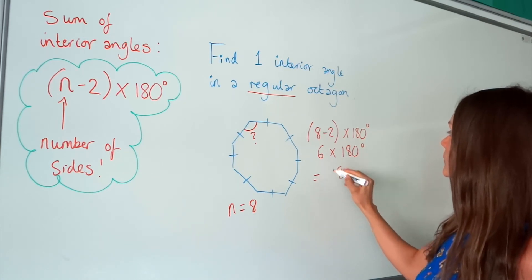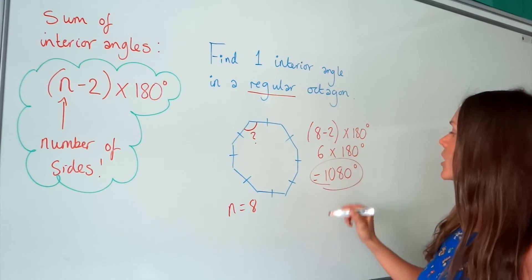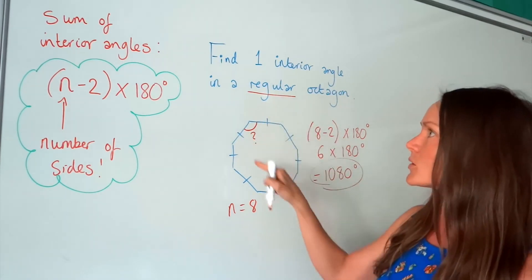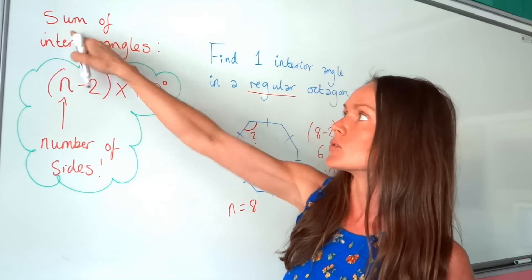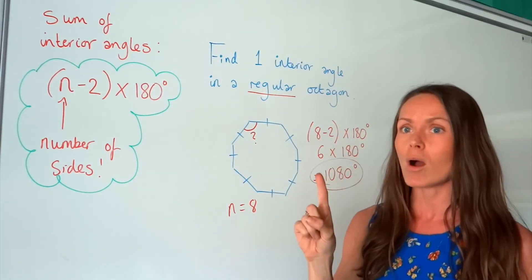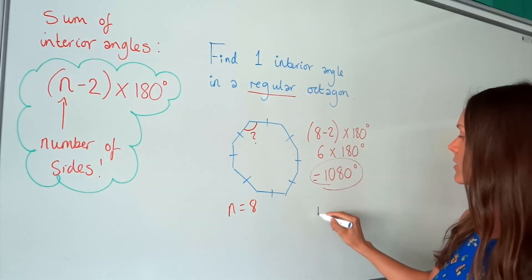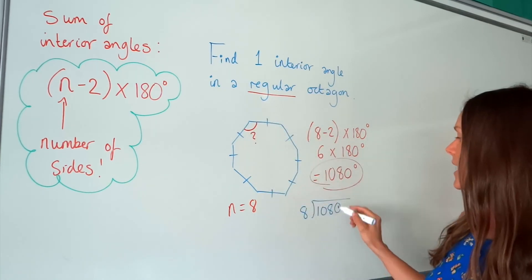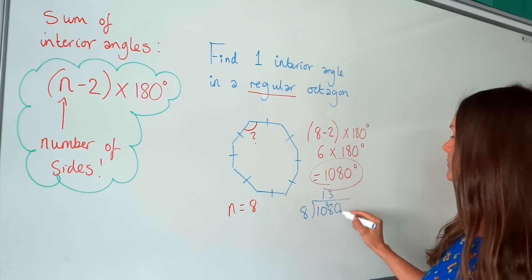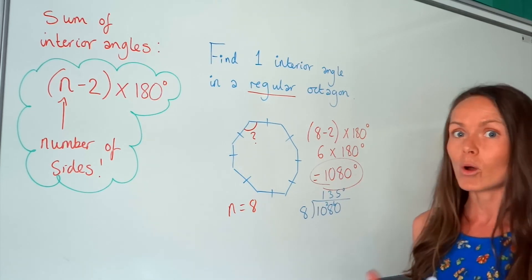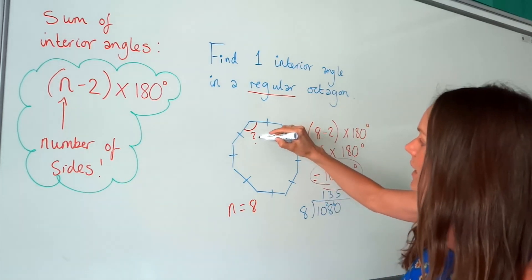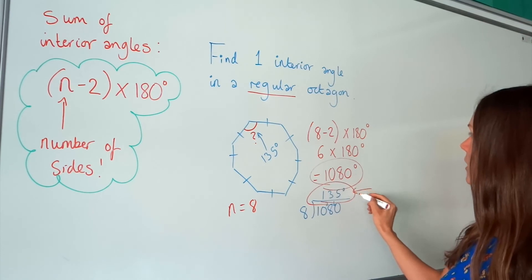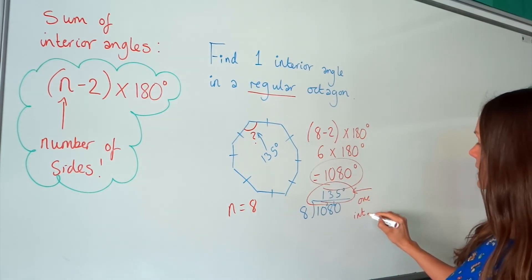So, that gives me 1080 degrees. So, all of these interior angles inside the shape, they add up to 1080. Remember, they add up to that because it's the sum of interior angles. So, we haven't finished the question yet, because the question is to find one. So, we need to take this answer here, 1080, and we need to divide it into eight, because there are eight equal inside angles. So, if I divide that number by eight, I get 135. So, this interior angle here is 135 degrees. That is one interior angle.